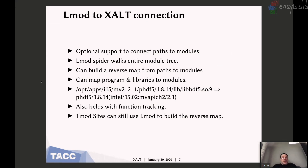Since I'm also the LMOD developer, I have this Spider tool which allows me to connect paths to modules, because Exalt just knows a particular path — it gets real paths. I can use the module Spider table to build what I call the reverse map, which says this particular long path comes from a particular module like PHDF5. So I don't have to manually convert these paths; I have a tool that converts this. This also helps with function tracking. And if you use Tmod, you can use LMOD to build a reverse map, so you don't have to subject your users to LMOD.